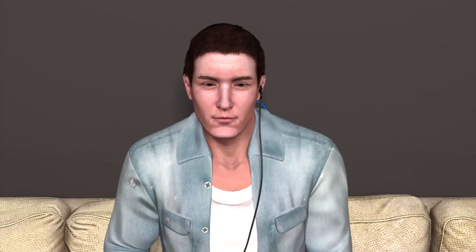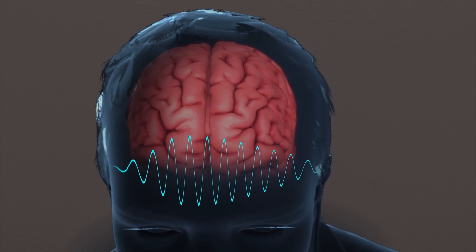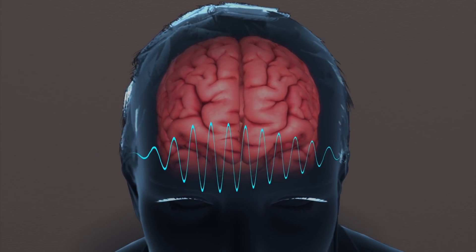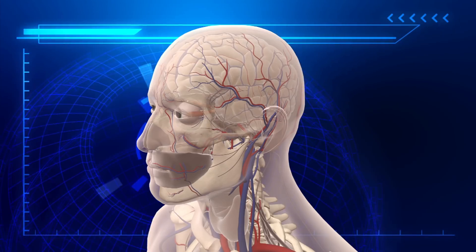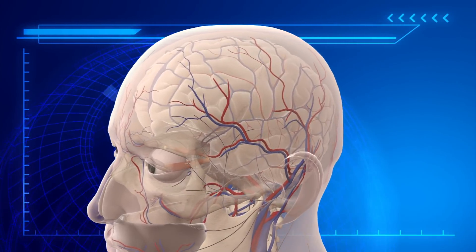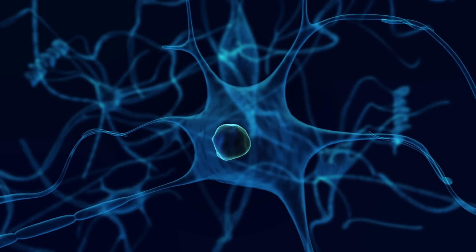Tinnitus is characterized as a persistent ringing or similar noise that can be heard in the ears. Lead researcher Susan Shore says that the dorsal cochlear nucleus, a region of the brainstem, is the root of tinnitus.